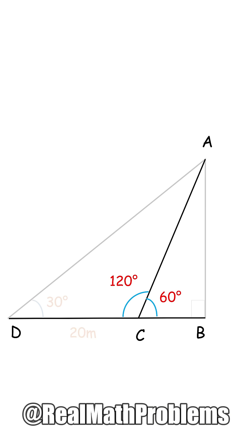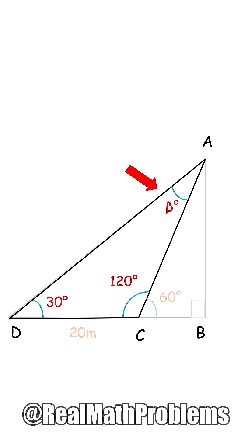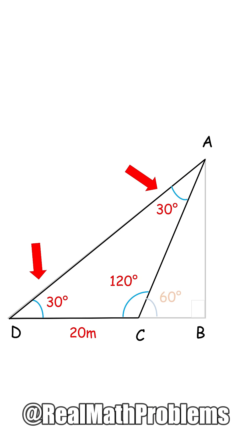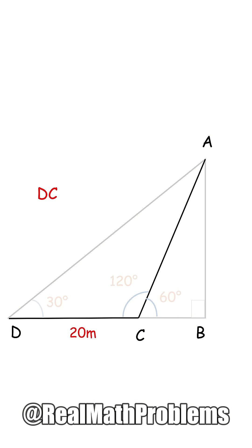Next, the beta angle in the triangle ADC can also be found by using the total sum A plus B plus C equals 180, and will equal 30 degrees. Now take a look at the ADC triangle — there are two angles both the same, 30 degrees, which means ADC is an isosceles triangle. That also means the segment DC will equal the segment AC, or AC equals 20 meters.